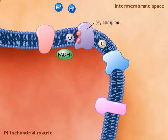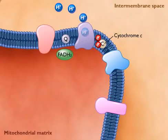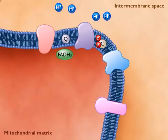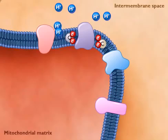As the electrons move from the BC1 to cytochrome C, more protons are carried from the inside to the outside of the membrane. Electrons are also transferred from FADH2 to coenzyme Q, with the protons being transferred across the membrane.